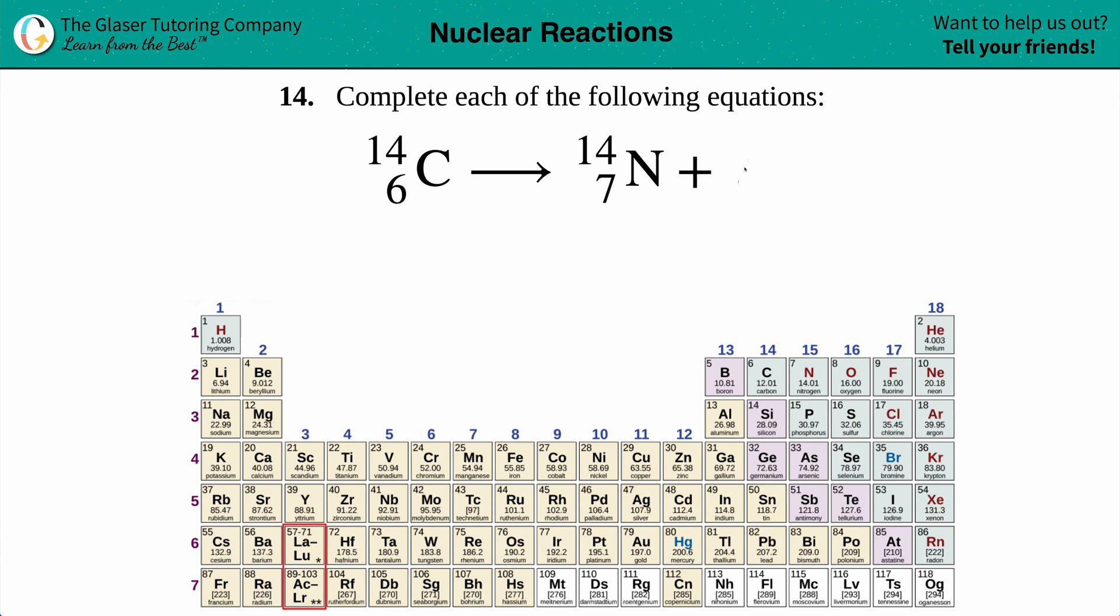For each notation we need to find out what the bigger element or the bigger lettering is, and then we need to know what the top number is and the bottom number.